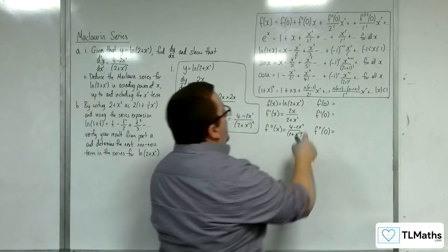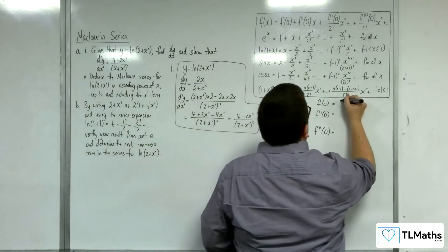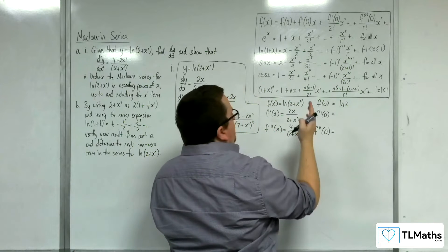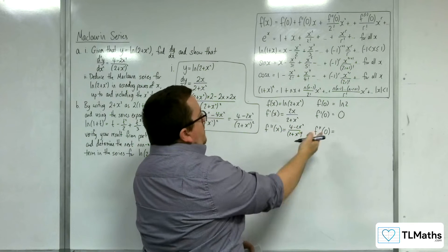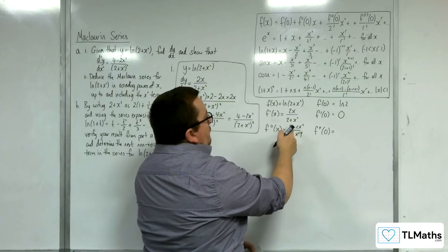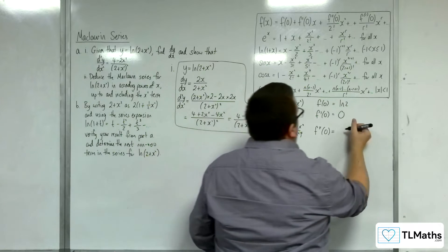Now f of 0, substituting that in, is just going to be log of 2. f prime of 0, well we're going to get 0 in the numerator, so that's just going to be 0. And f double prime of 0, we're going to get 4 over 2 squared, so 4 over 4 is 1.